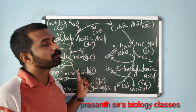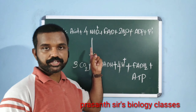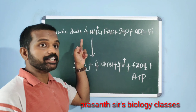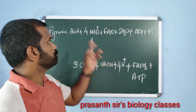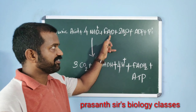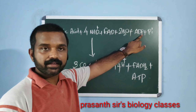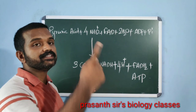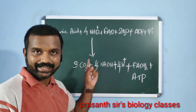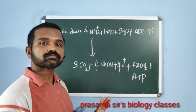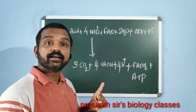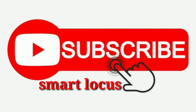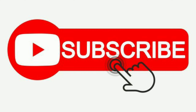This is the equation for reactions that take place in the mitochondrial matrix, that is the link reaction plus Krebs cycle: pyruvic acid + 4NAD⁺ + FAD + 2H₂O + ADP + inorganic phosphate → 3CO₂ (two in Krebs cycle, one in link reaction) + 4NADH + H⁺ (three in Krebs cycle, one in link reaction) + FADH₂ + ATP. If you're not yet subscribed, please subscribe to my channel and comment below if you have any doubts.